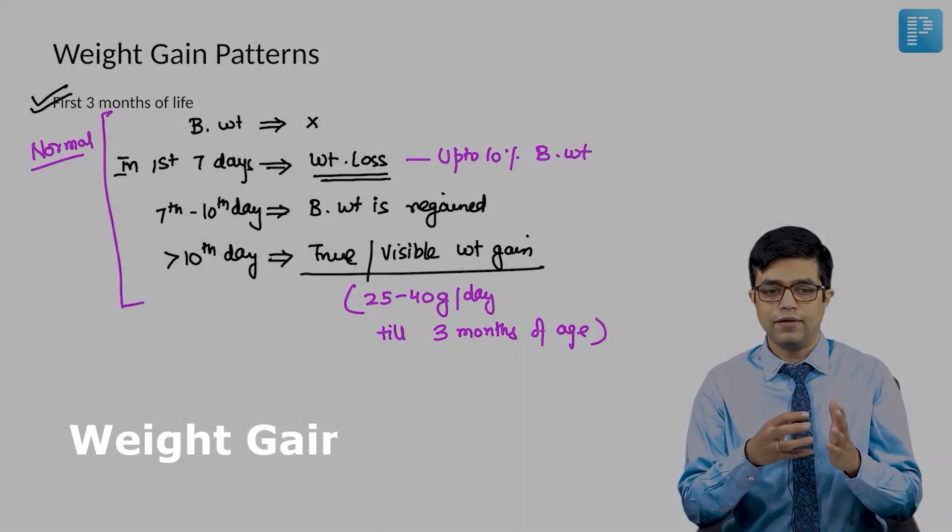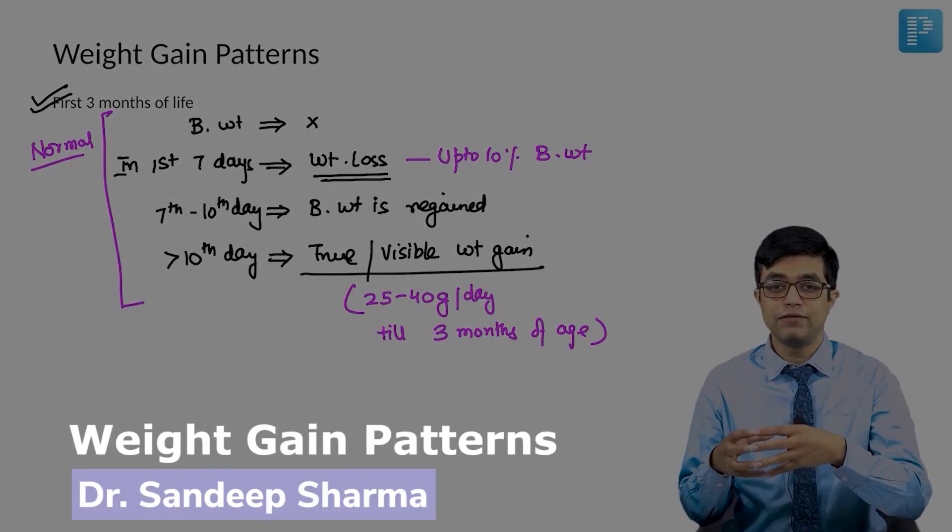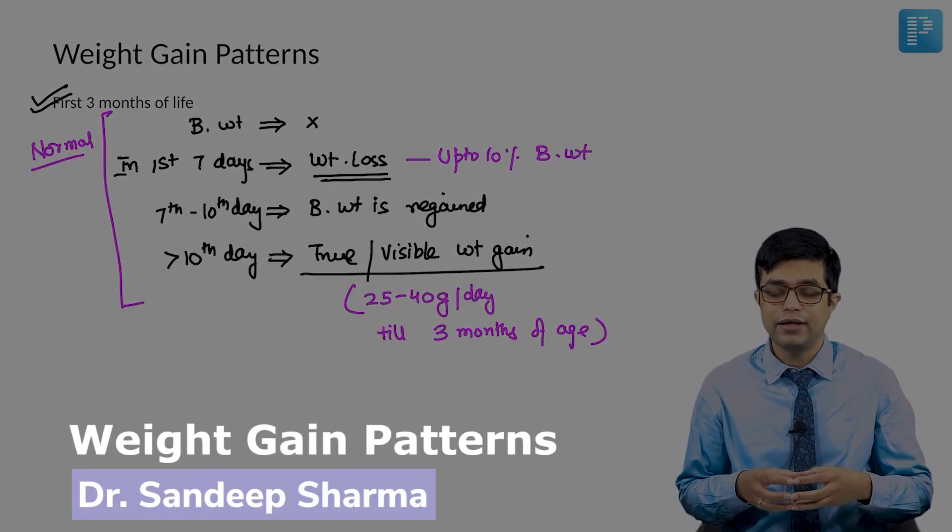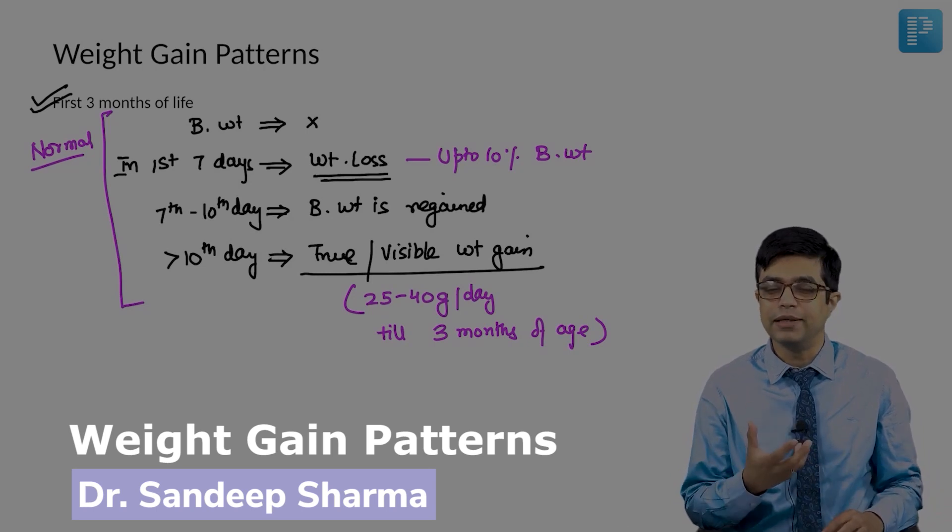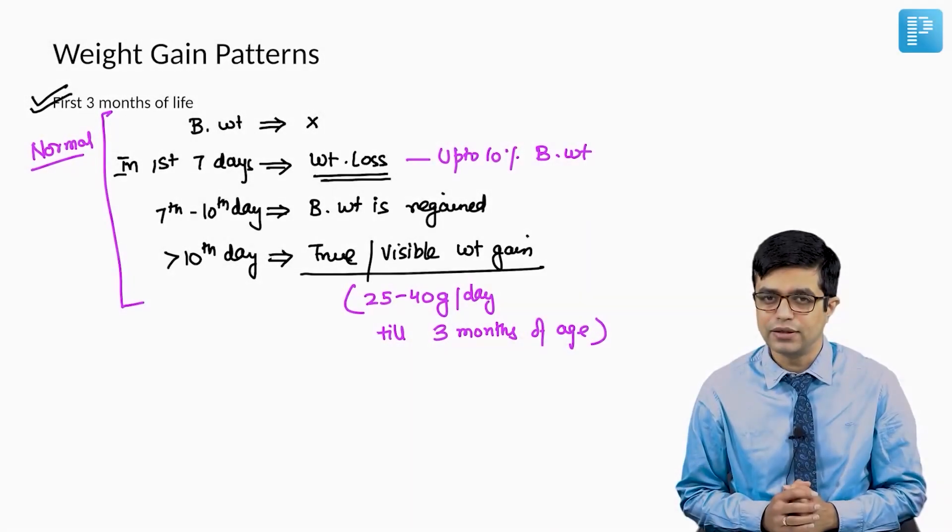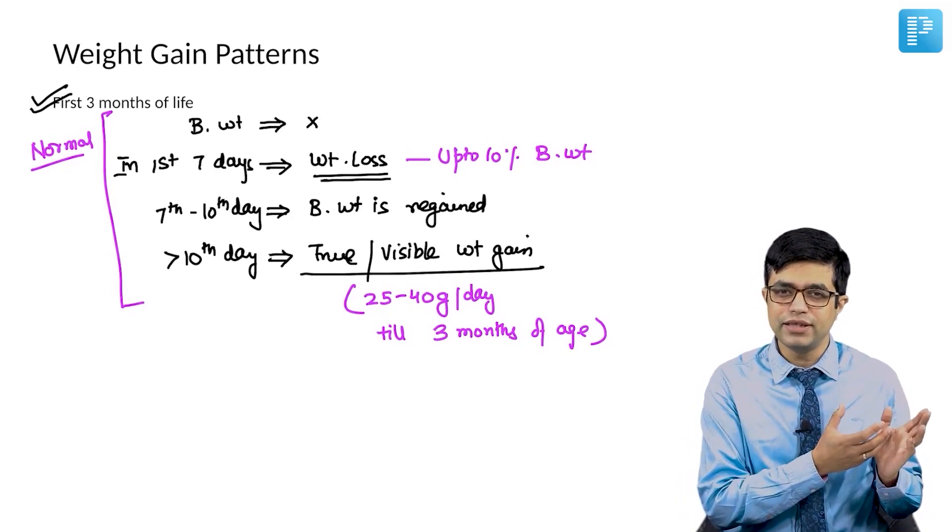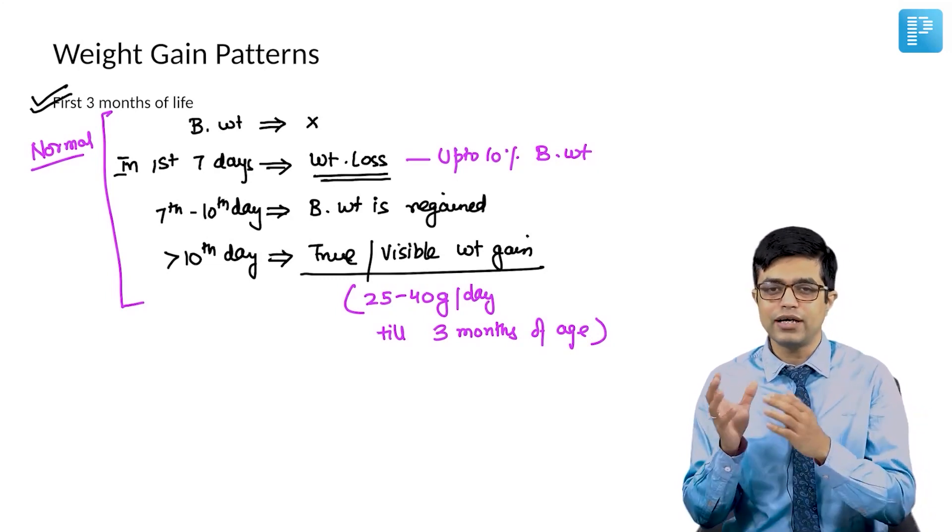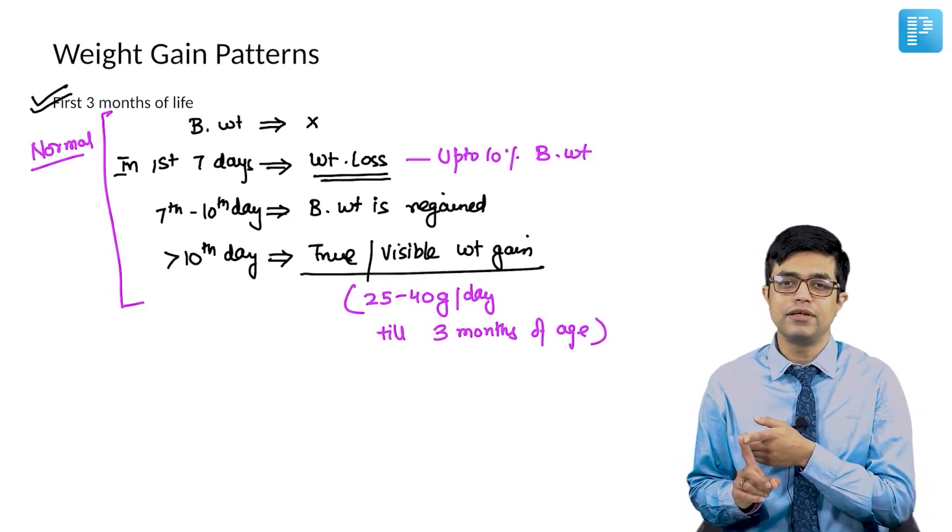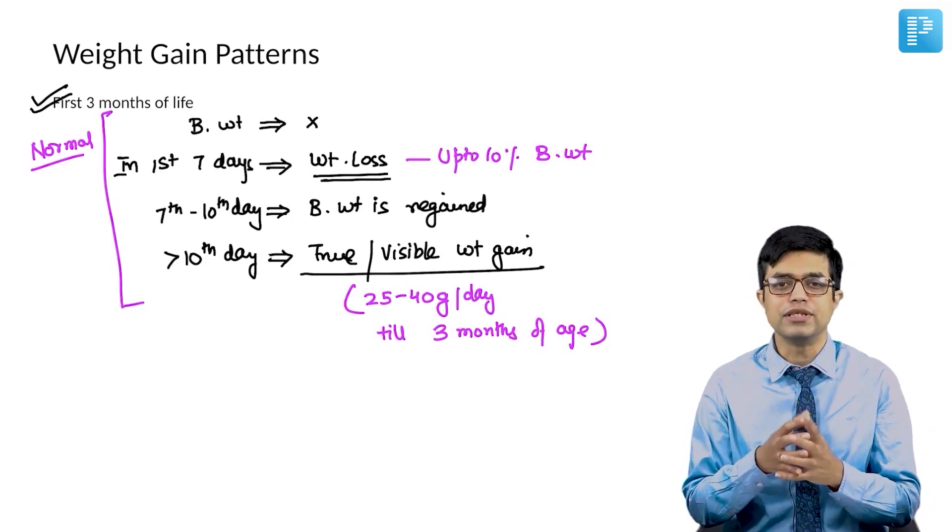First of all, every child when he is in a fetus form has a lot of subcutaneous edema or edema fluid present. So that fluid retention which is there in a fetus tends to get lost in the first 7 to 10 days whenever diuresis happens.